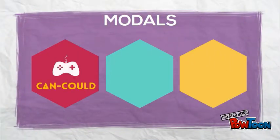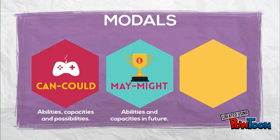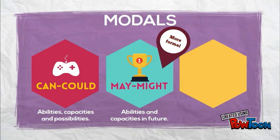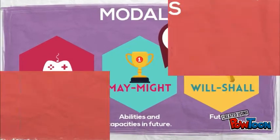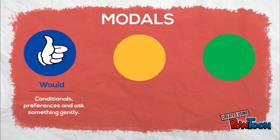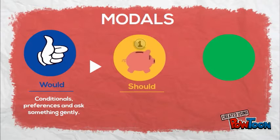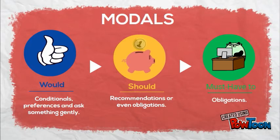We have can and could — these modals indicate abilities, capacities, and possibilities. May and might, for abilities and capacities in the future. And will and shall, which are used to indicate future. Then we have would, which is used for conditionals, preferences, and to ask something gently. Then should, when you have recommendations or even obligations. And must and have to, for obligations.